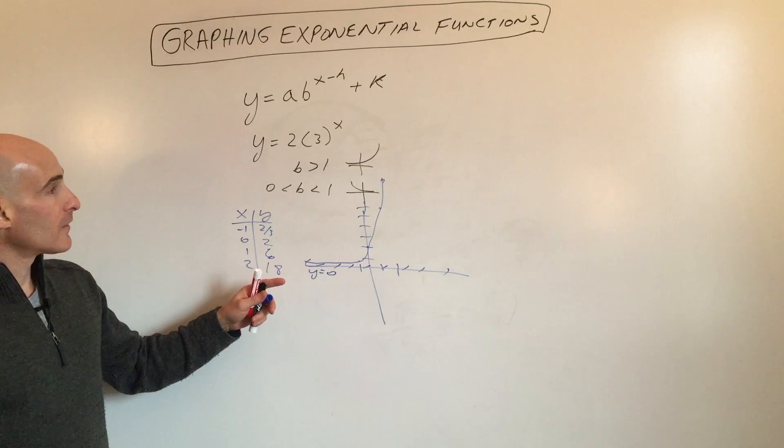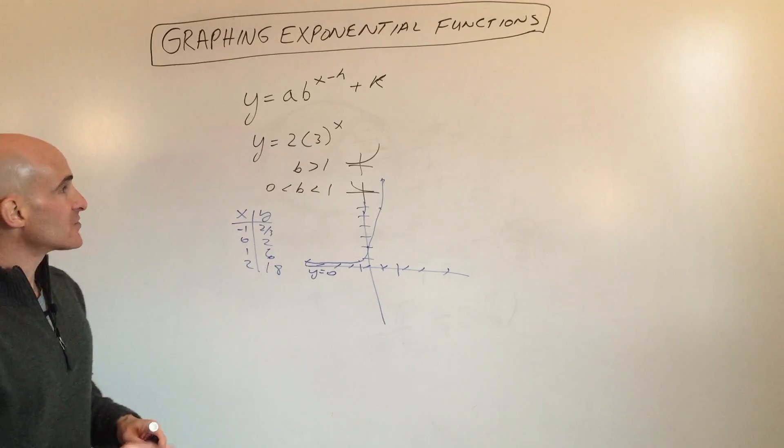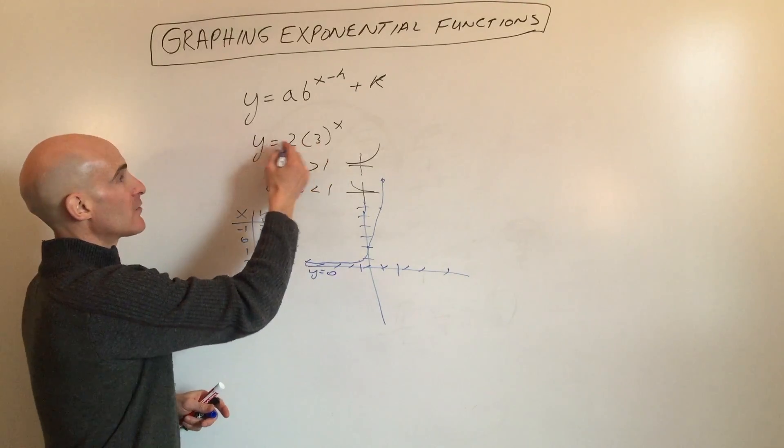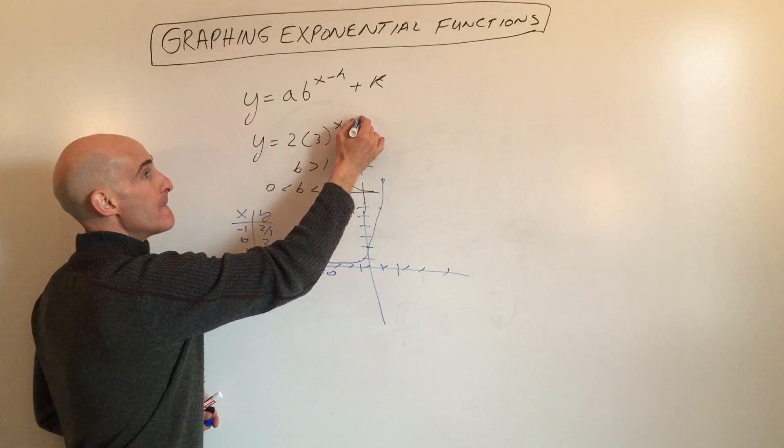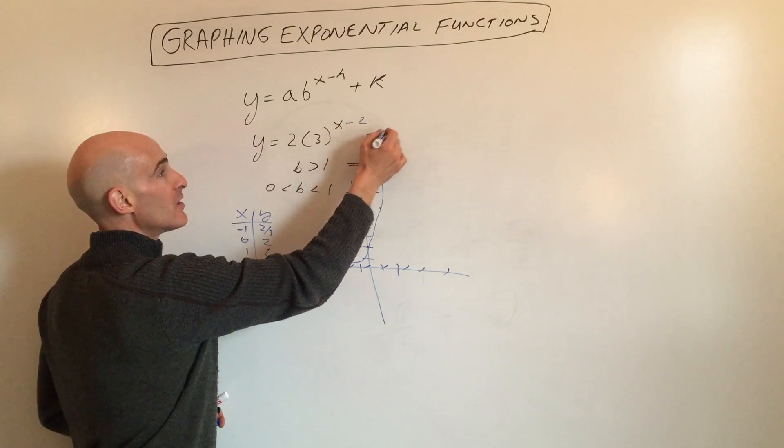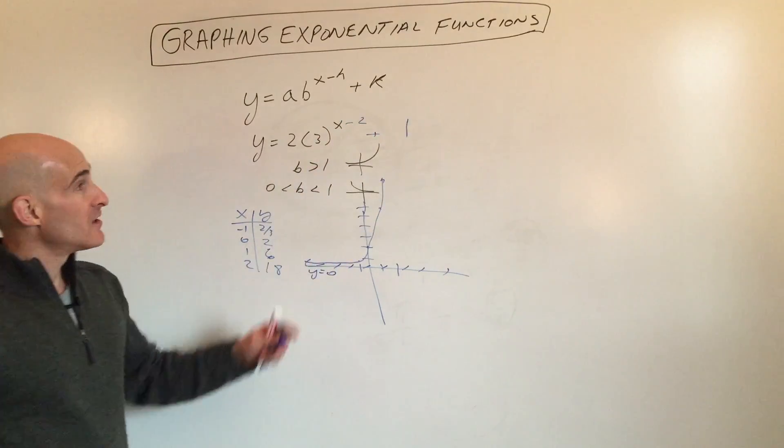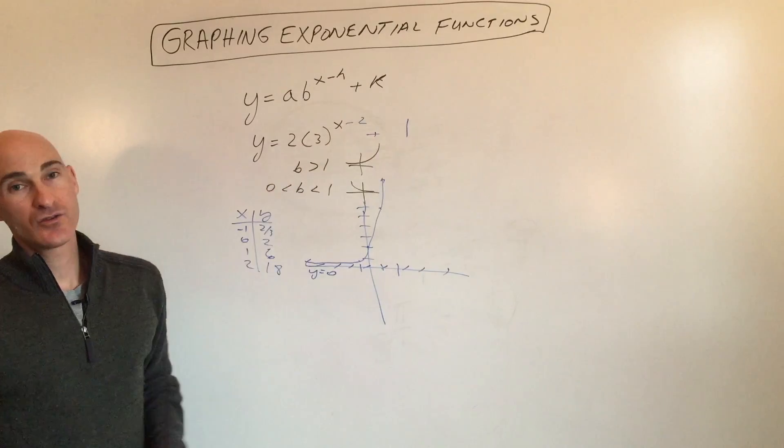Now what we're going to do is shift this graph. Instead of graphing y equals 2 times 3 to the x, we graph y equals 2 times 3 to the x minus 2 plus 1. What do you think the 2 and the 1 do to the graph?